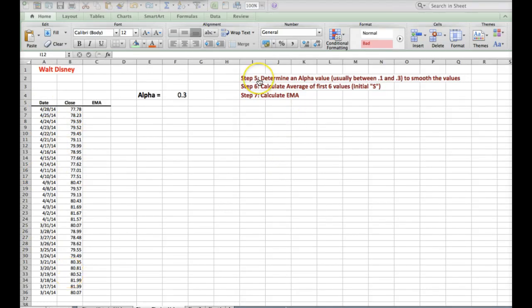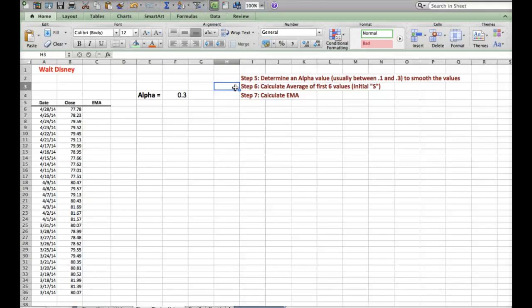I need to determine an alpha value. Usually the alpha values are between 0.1 and 0.3 and this will help to smooth my values. You should know that the greater the alpha value, the closer your chart will look like the actual closing price. The smaller the alpha value, the more smooth it'll be and we'll examine that difference once we graph our information. Be careful though when you're typing in your alpha value that you actually type the value into its own cell, not with the words alpha equals. Otherwise Excel won't recognize the 0.3 as a number. All right, now let's move on to step six. We need to calculate the average of the first six values. That's what we're going to use, six values. But you could use 20 days or 10 days. But this will give us our initial s in our equation.